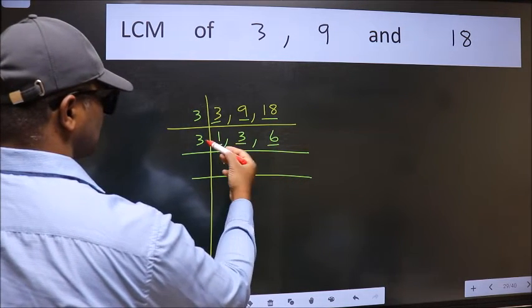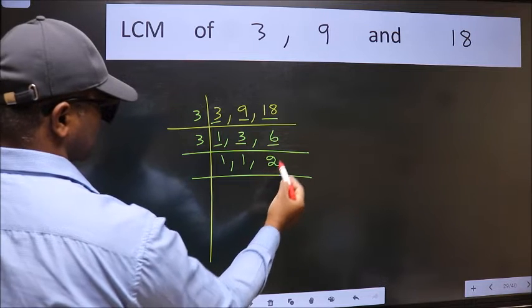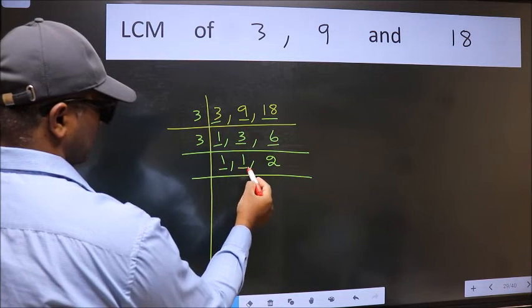The other number 6. When do we get 6 in the 3 table? 3 times 2 is 6. Now we got 1 here and here.